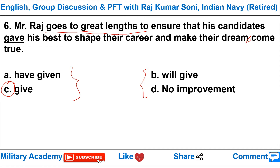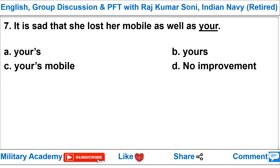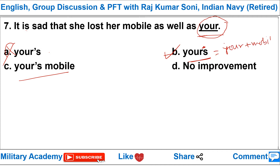Question 7: 'It is sad that she lost her mobile as well as your.' This question is about correct use of pronouns. 'Your' is incorrect here; we need the possessive pronoun 'yours'. 'Yours' equals 'your mobile' — we don't need to repeat the noun. No comma is required either. Option B, 'yours', is the correct possessive pronoun in this context.